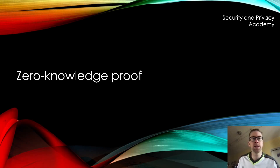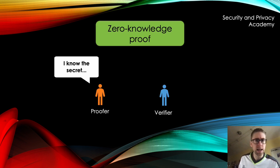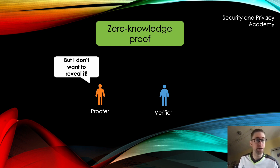Hello everyone, this is Patrick from Security & Privacy Academy. Today we are talking about zero-knowledge proofs. A zero-knowledge proof is needed if a prover wants to prove that they know a secret, but they don't want to reveal the secret to anybody — not even the verifier.